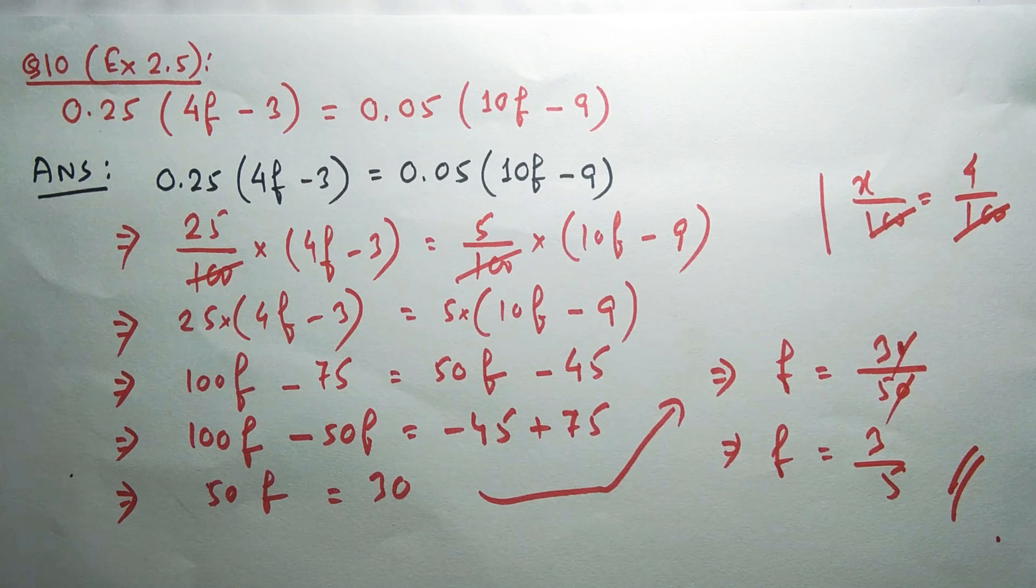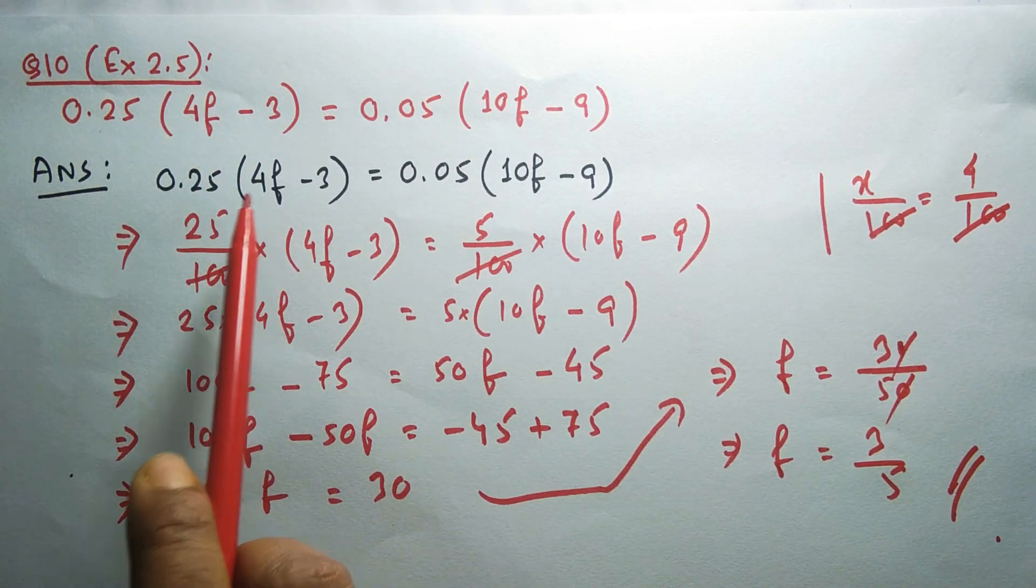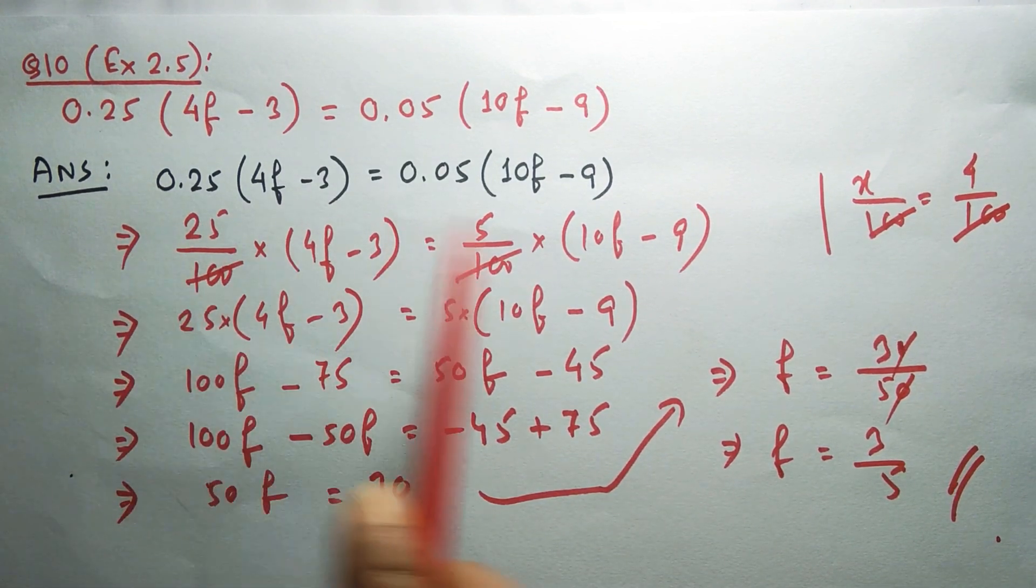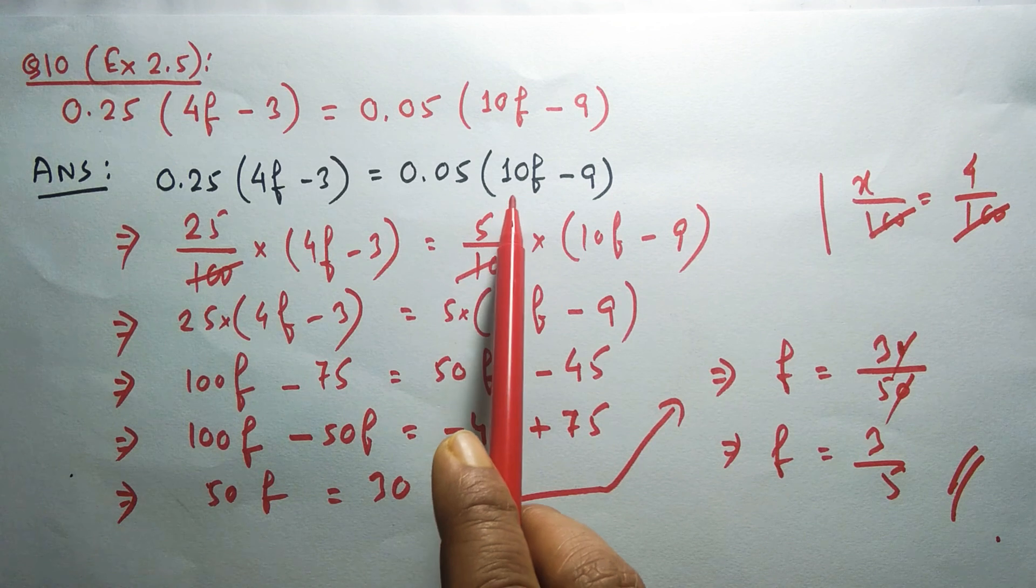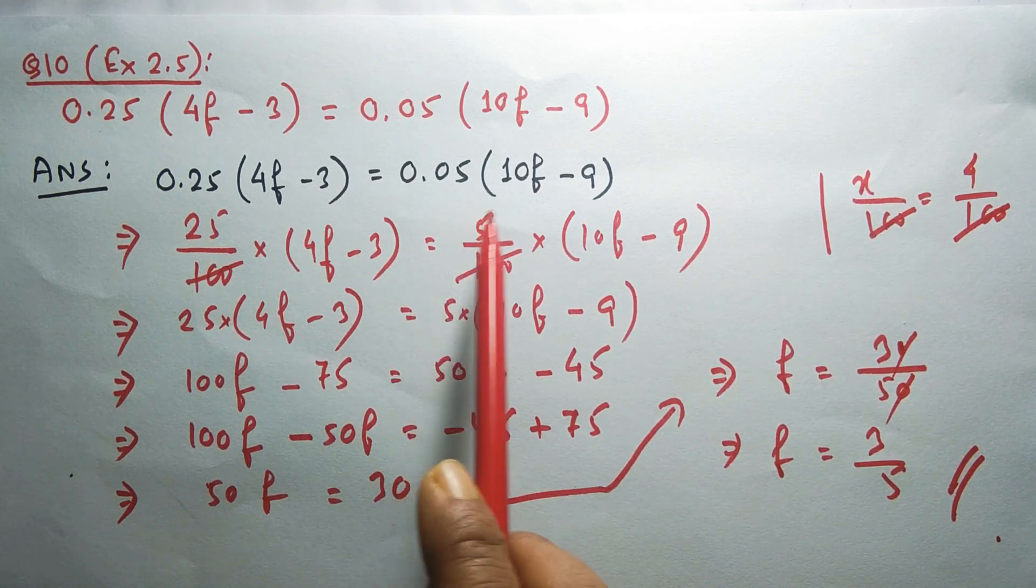I have converted this number into fractions, but it's not at all necessary. You can directly multiply 0.25 into 4 which will be 1.00. Similarly you can multiply 0.05 into 10 which will be 0.5.